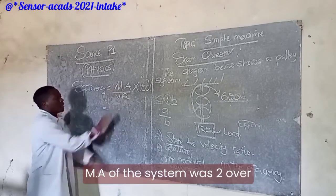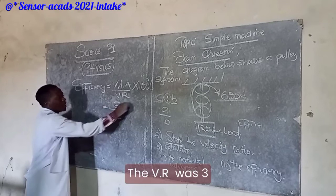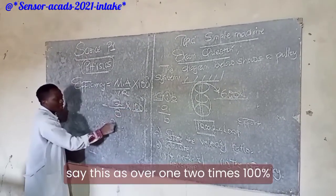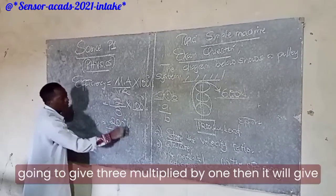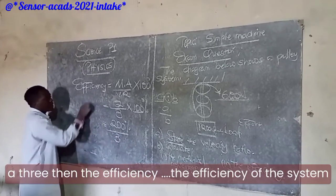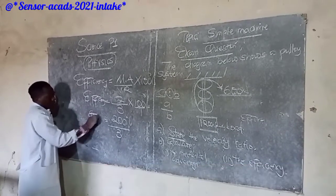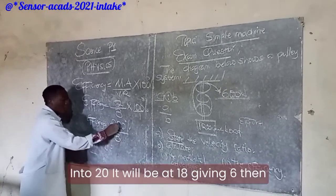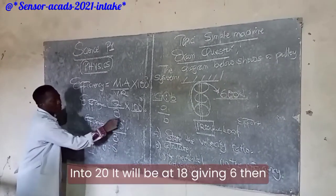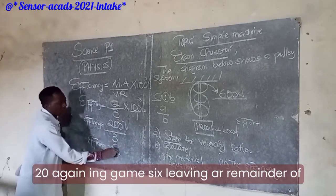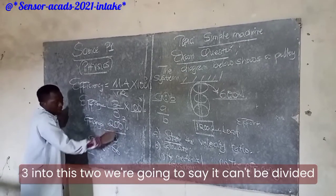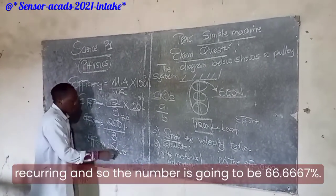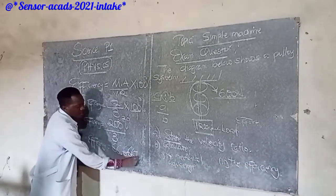The mechanical advantage was 2 and the velocity ratio was 3, so: Efficiency = (2 ÷ 3) × 100%. This gives 200% divided by 3. Dividing out, we get 66.6 recurring percent. So the efficiency of the system is approximately 66.67%.